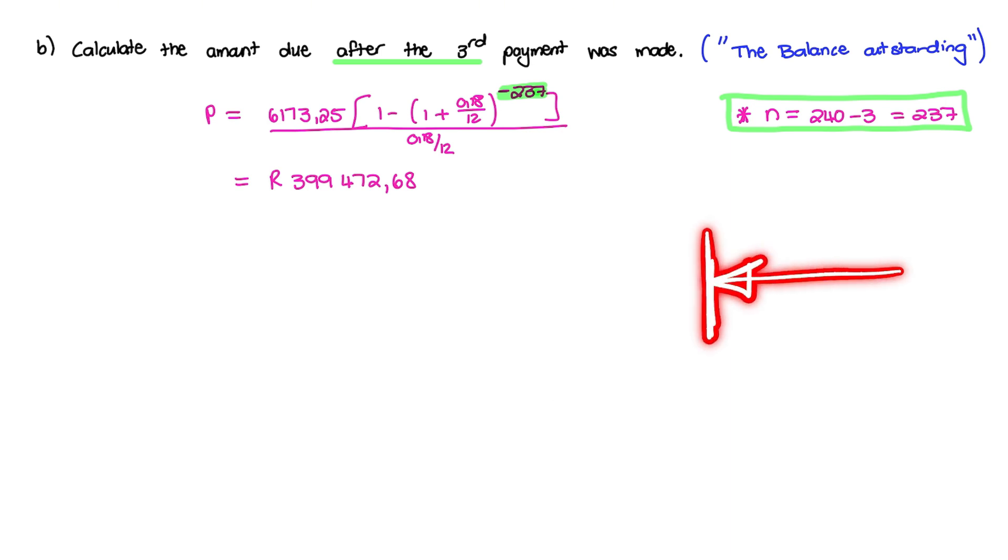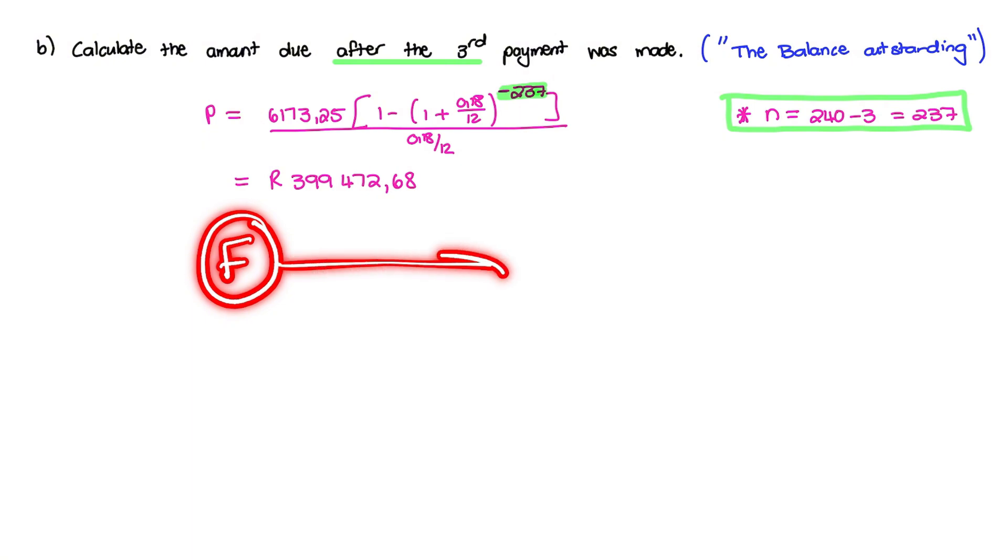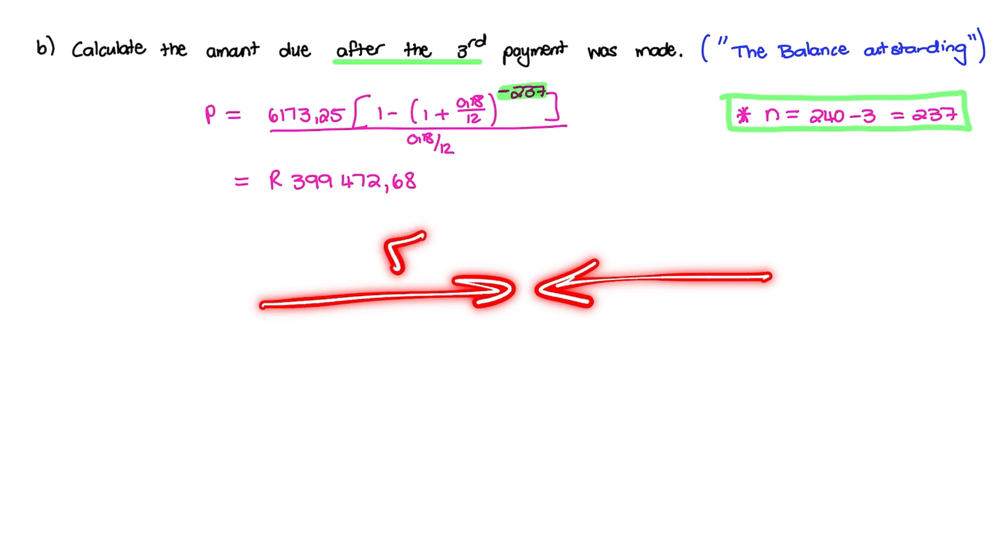But for this video, I thought it wise to also show you how it works when we move money backwards. So when we move money backwards to find the outstanding balance, then we use the P formula instead of the F formula. That's when we move money forward. If you don't know what I am referring to with forwards and backwards, please go watch our video on the balance outstanding.